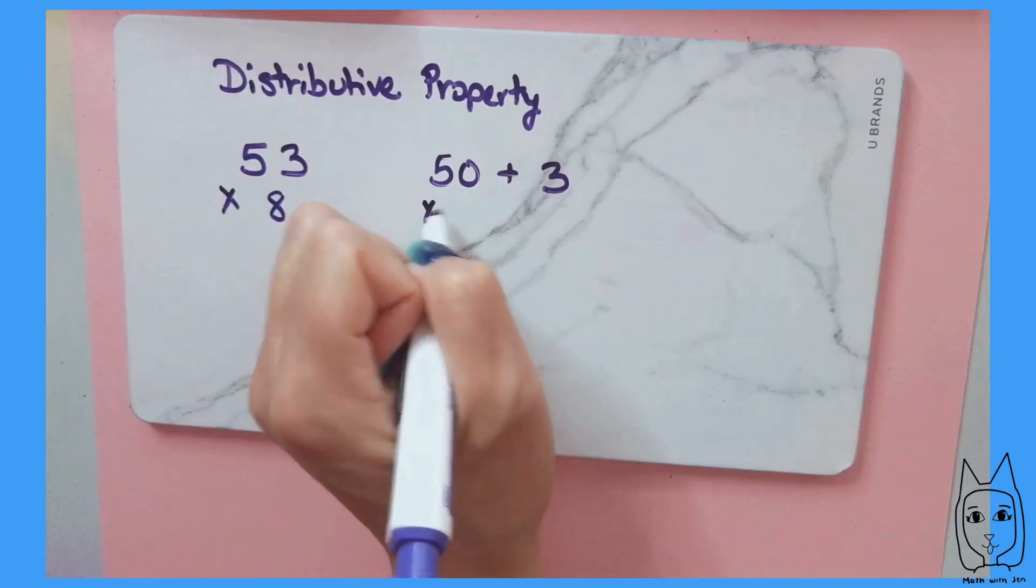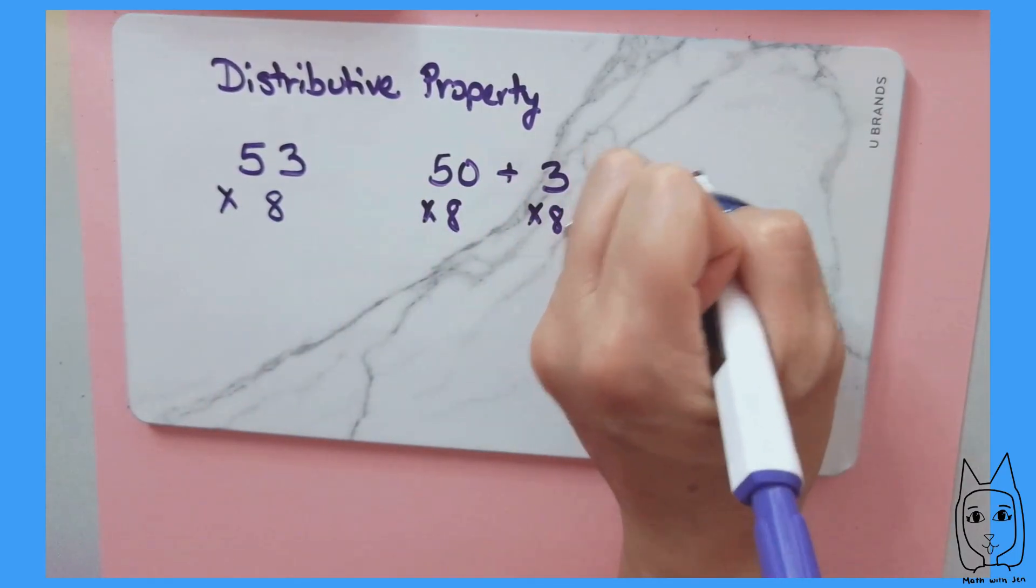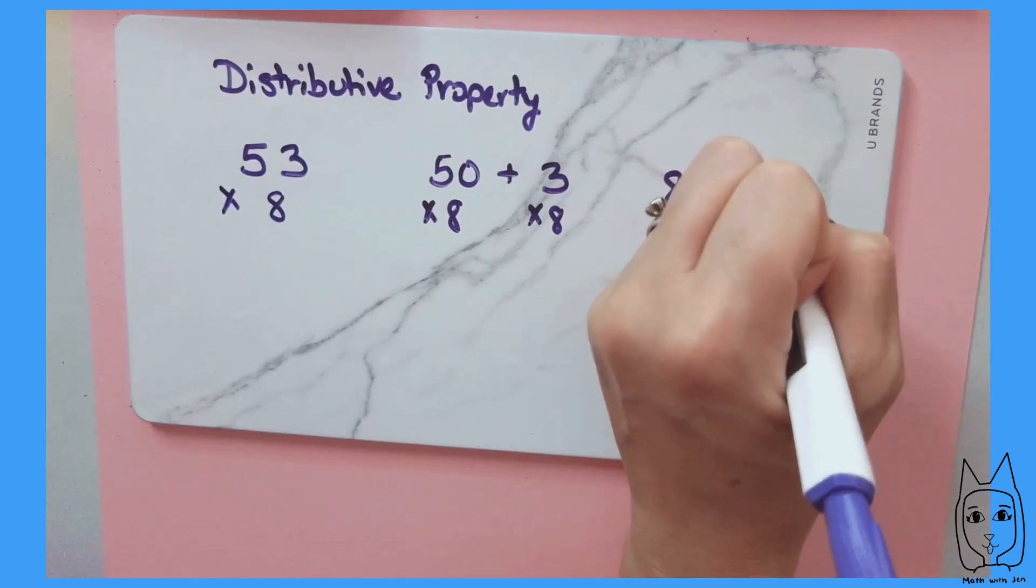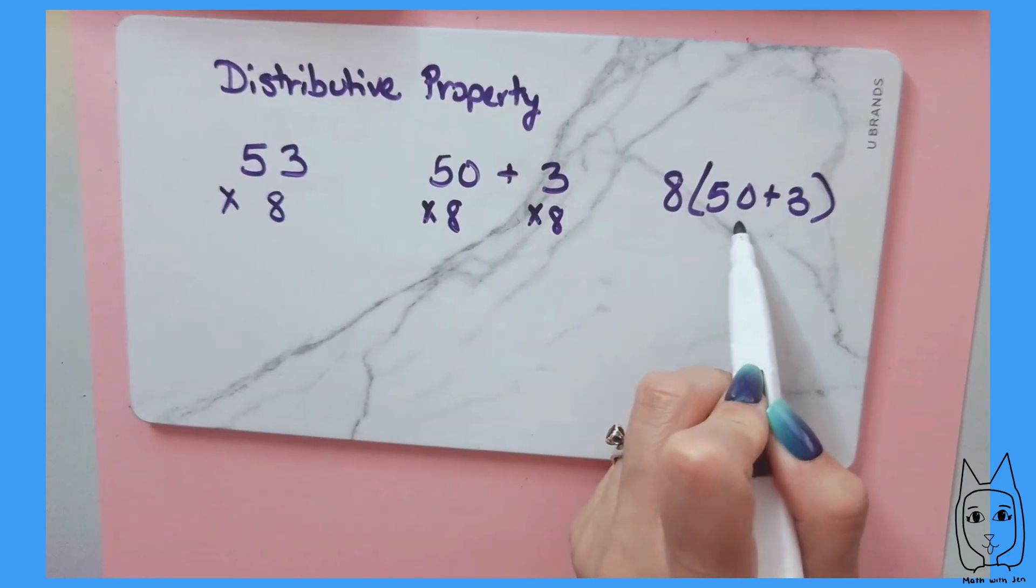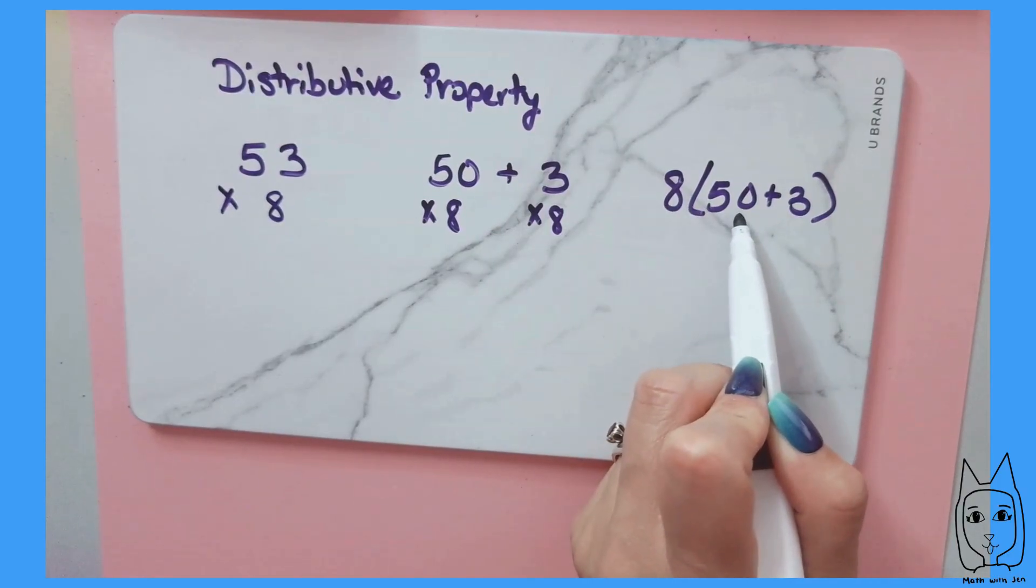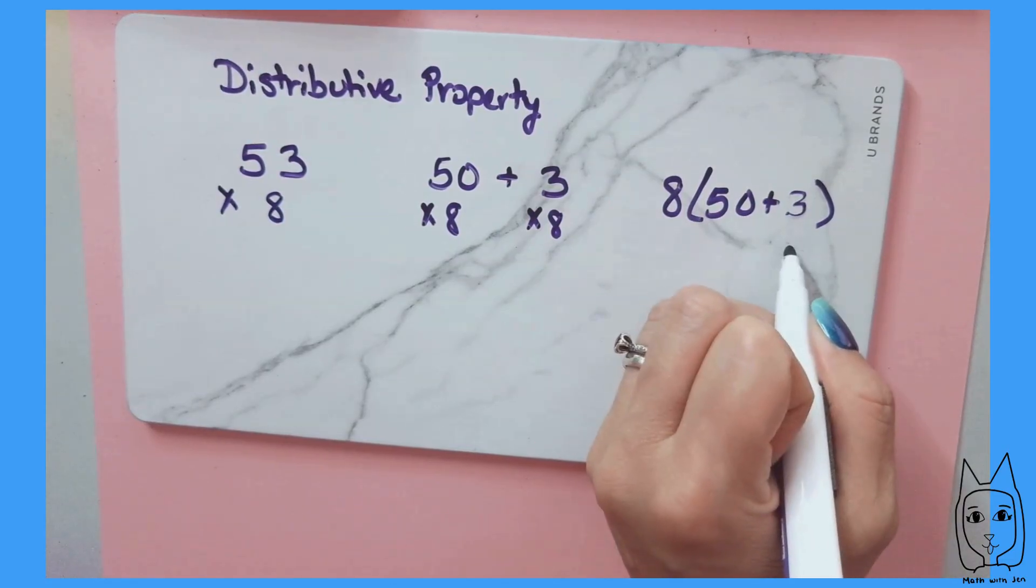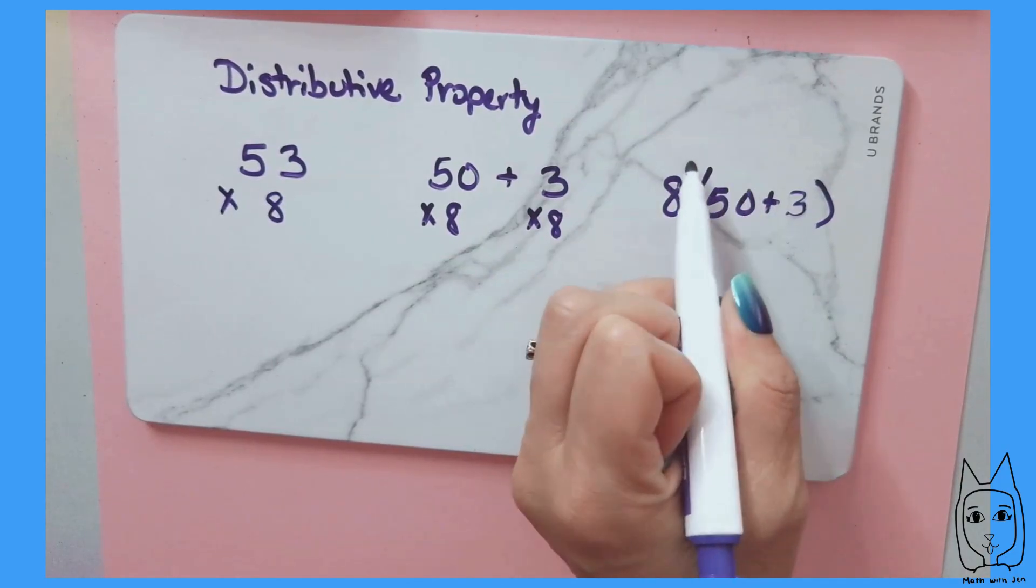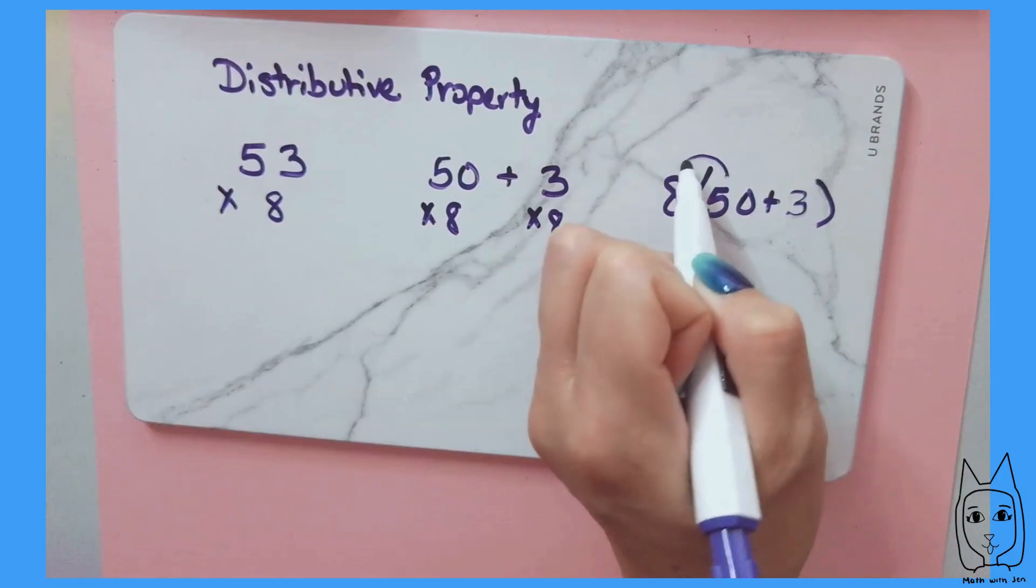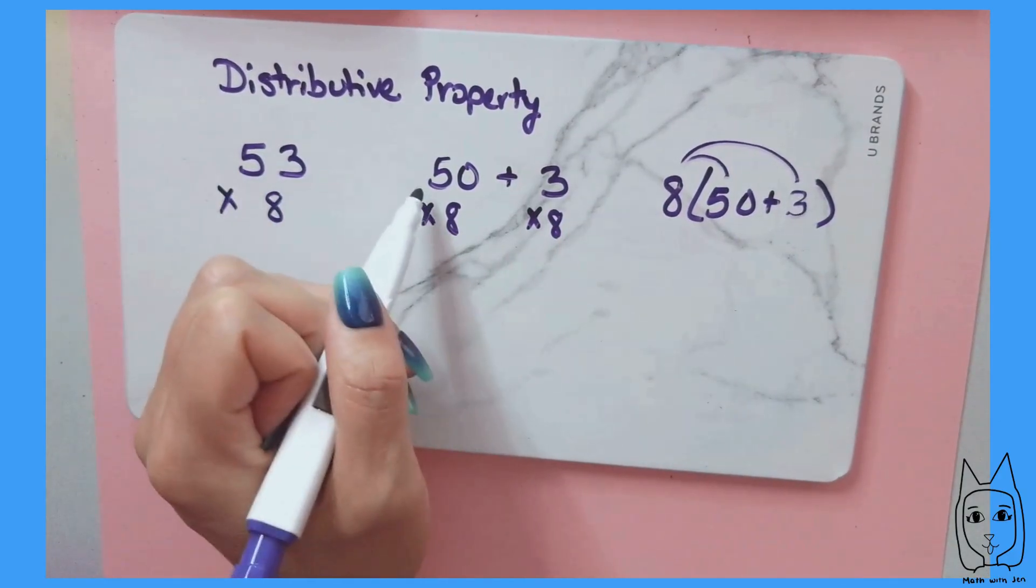You can multiply those both by 8, and a lot of times it's written like this for the distributive property. I'm going to take that 8 and I'm going to multiply it by the 50. I'm going to take that 8 and multiply it by the 3, and then add those together. That's the distributive property. I'm going to take the multiplier and distribute it to both of those addends that I broke the 53 up into.